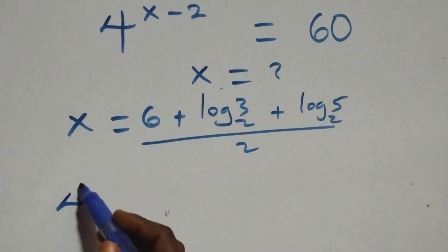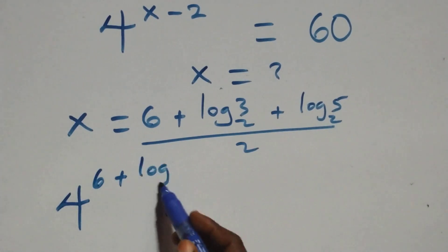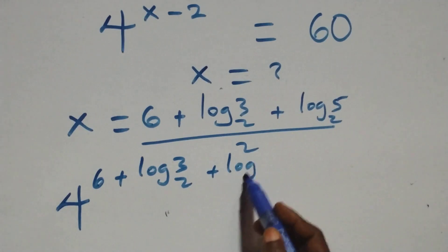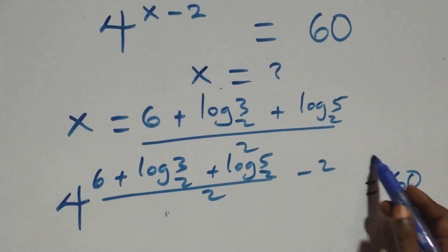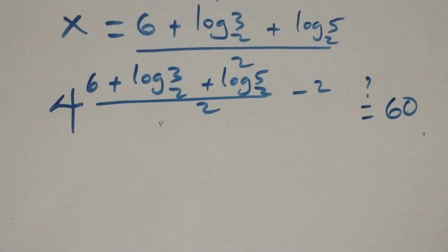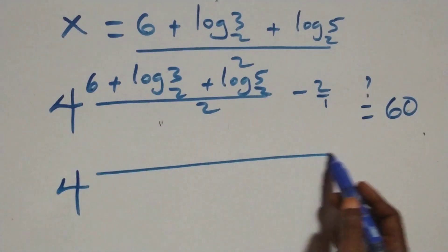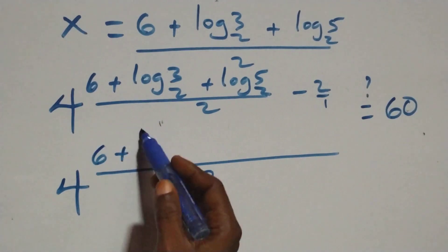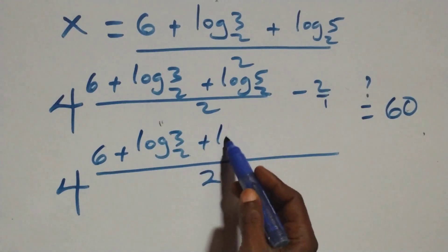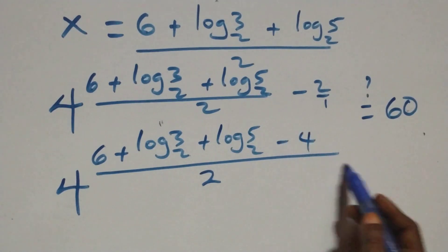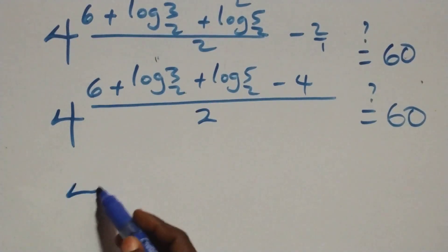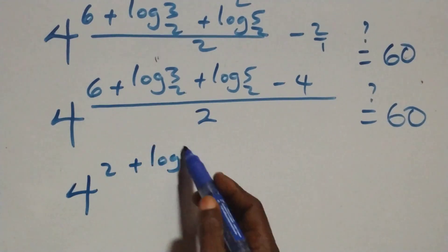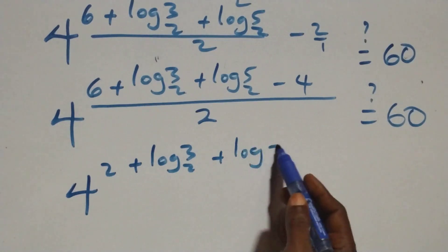Let's check if this satisfies the given problem. We substitute x equals six plus log three base two plus log five base two, all over two. Then minus two, this should equal sixty. Bringing the parts together as one fraction and substituting, we get six plus log three base two plus log five base two minus four, all over two equals sixty. Six minus four gives two, so we have two plus log three base two plus log five base two, all over two equals sixty.